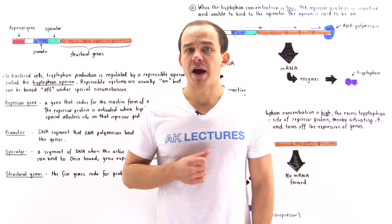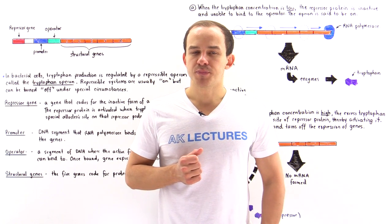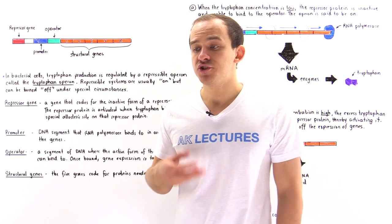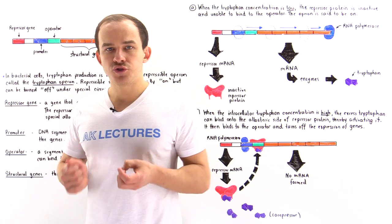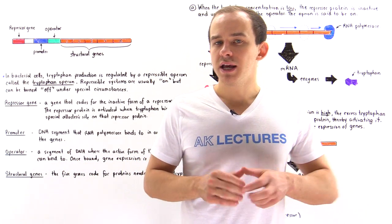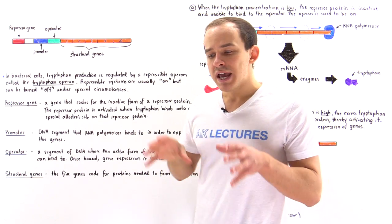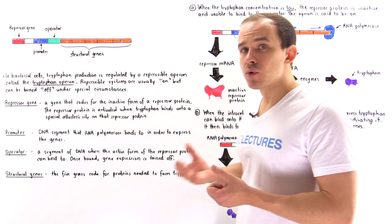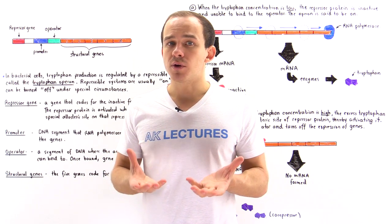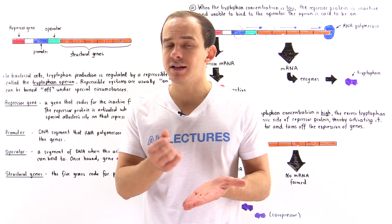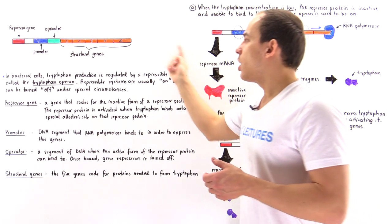The way that prokaryotic cells, such as bacterial cells, regulate gene expression is by using these units of DNA we call operons. We already spoke about the lac operon, and generally speaking, an operon is this segment of DNA that not only contains the special structural genes needed to produce some type of enzyme or enzymes, but it also contains other important segments of DNA, such as the operator section and the promoter section. In this lecture, we're going to focus on a type of operon used by bacterial cells in anabolic processes. An anabolic process is simply a process in which we synthesize some type of molecule needed by the bacterial cell, and the type of operon we're going to focus on is a repressible operon.